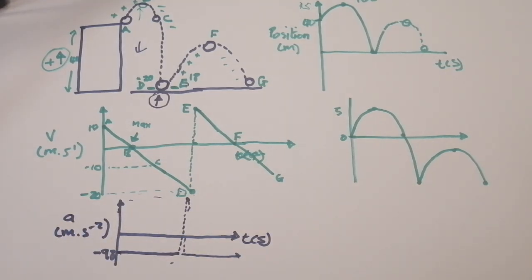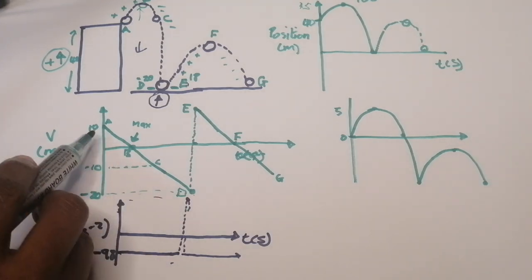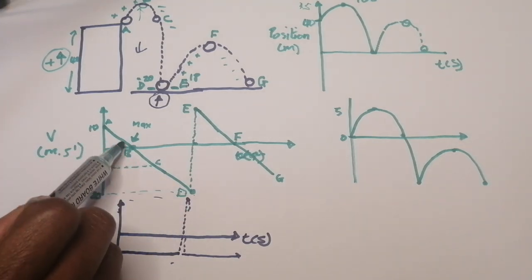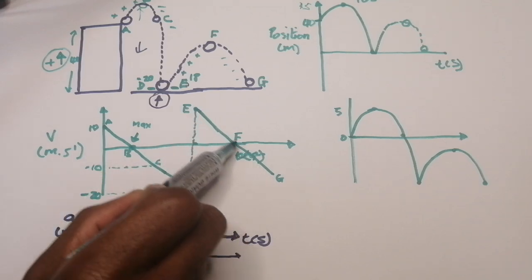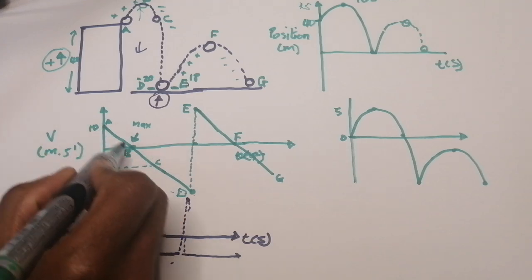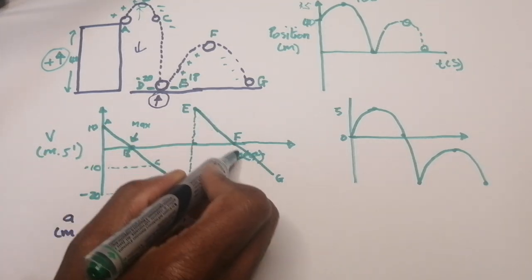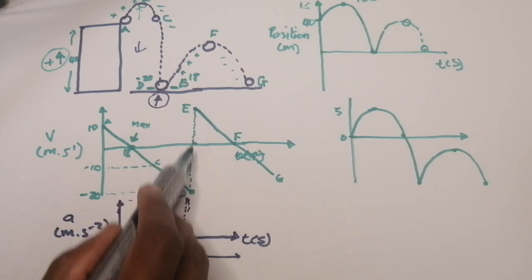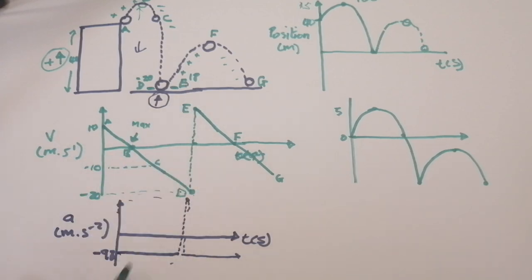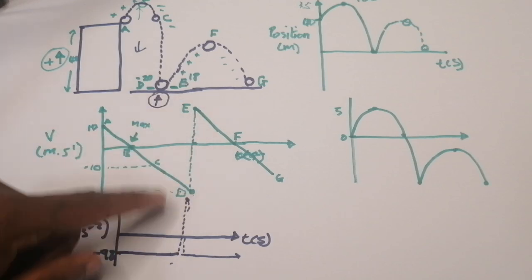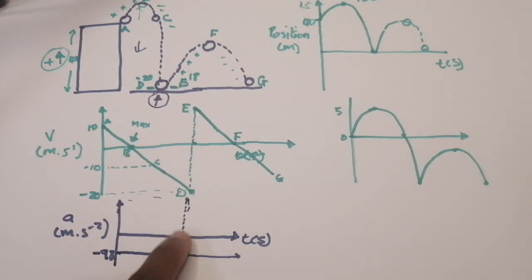Note that the gradient of the velocity-time graph is the same throughout — 9.8 — except during that almost vertical section at the bounce, where the gradient is much steeper, corresponding to that large acceleration during ground contact.